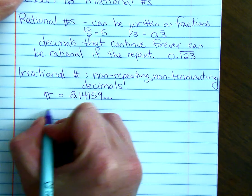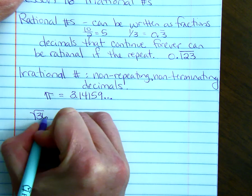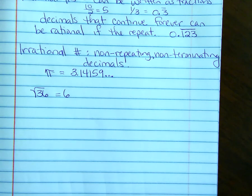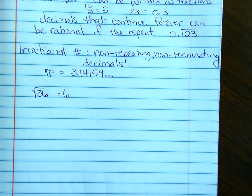When we look at the square root of 36, this is rational because it actually equals 6, which can be written as a fraction, 6 over 1, or 12 over 2, or 18 over 3.